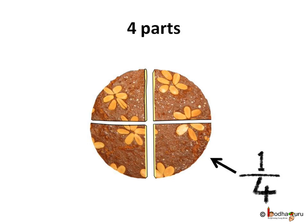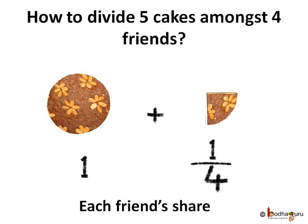So each piece is one out of the four equal pieces, that is one fourth part of a cake. So how were the five cakes shared equally by the four friends? Each one of them got one whole cake and one fourth part of the fifth cake.